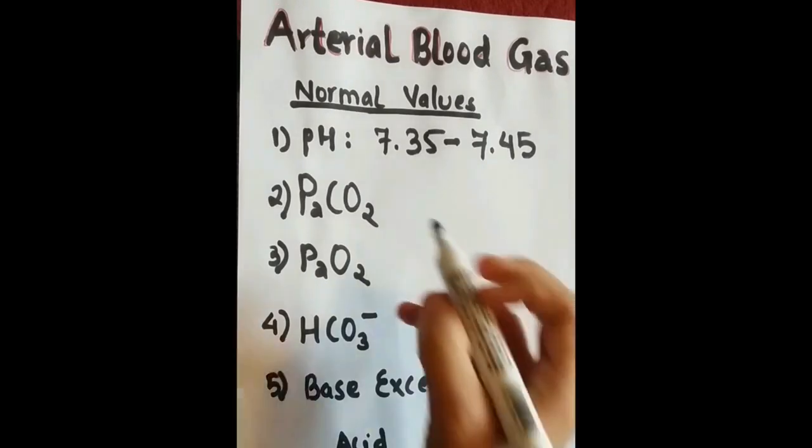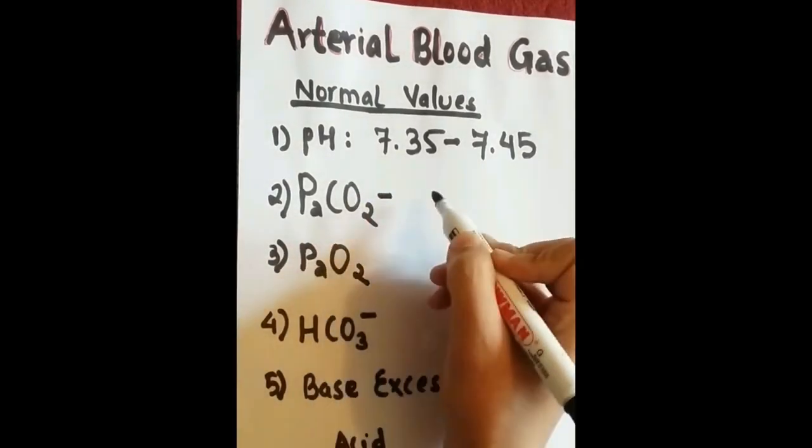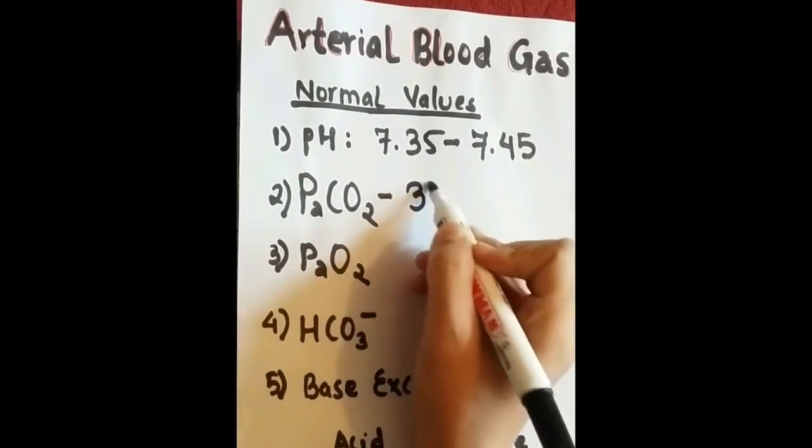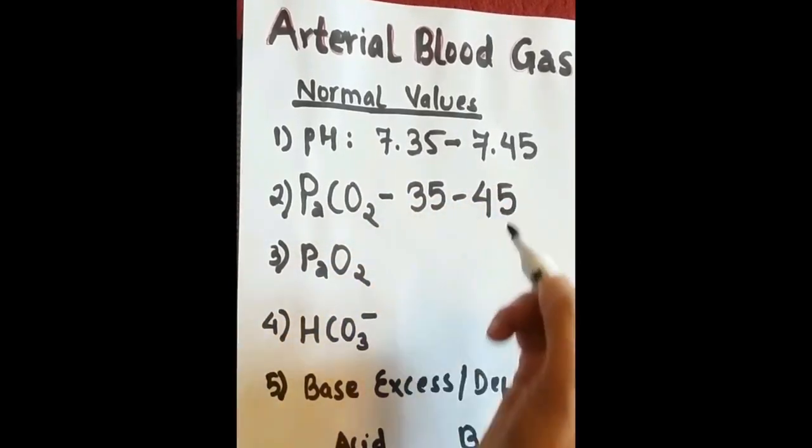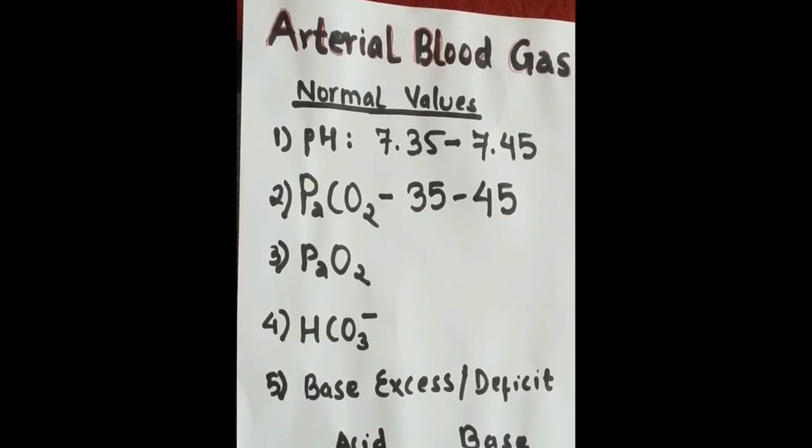And then, partial pressure of carbon dioxide. Its normal range is 35 mmHg to 45 mmHg.